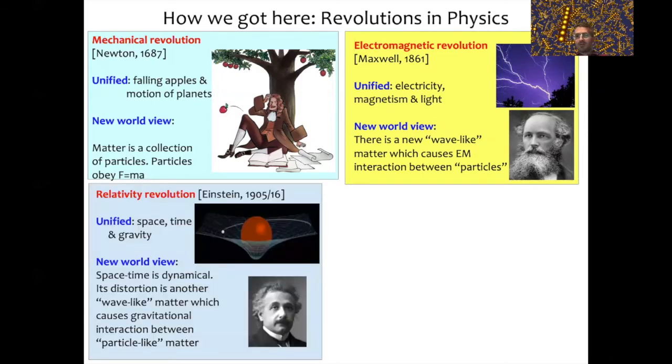At the beginning of the 20th century, we have the relativity revolution, of course due to Einstein. Through that revolution, we managed to unify things like space, time, and gravity. People knew about space and time but they didn't see any deep connection between these two, until Einstein presented us with this idea that space-time is a kind of single dynamical entity. You can distort the space-time and then you get a wave-like matter which actually causes gravitational interaction between particle-like matter.